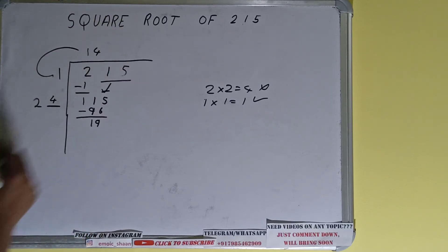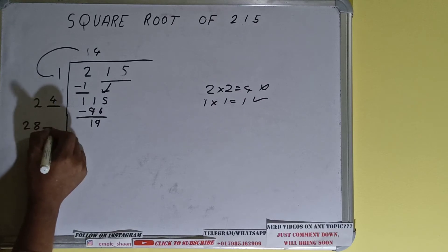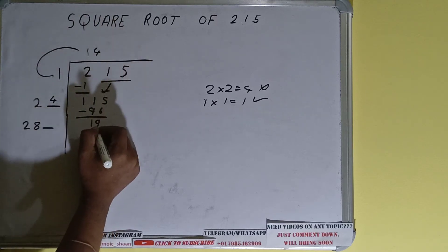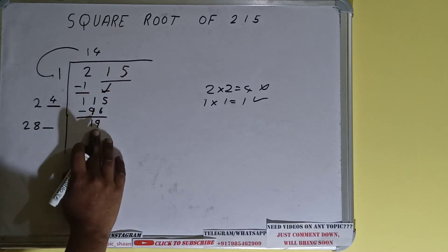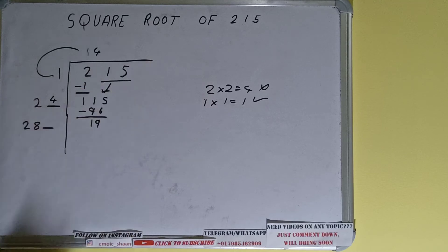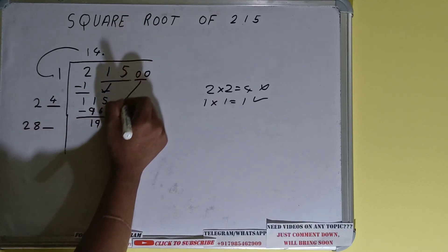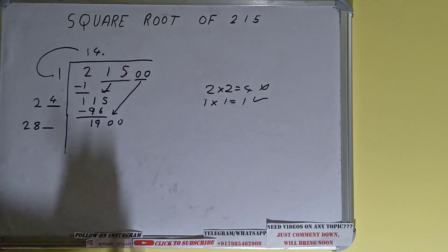We need to make this number big so that we can divide, but you can see we don't have any more pairs present over here that can be brought down. So what we'll do is we'll put decimal. Once we put decimal we can bring down pairs of zeros and number will become 1900.